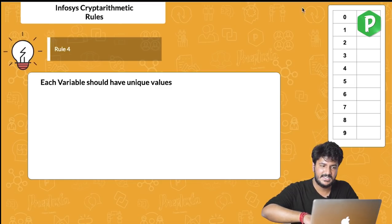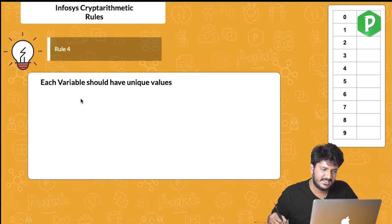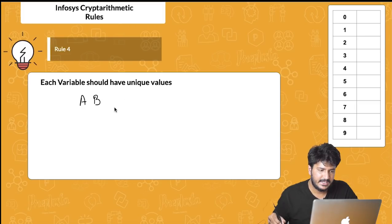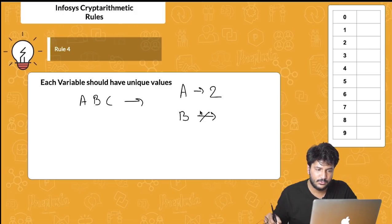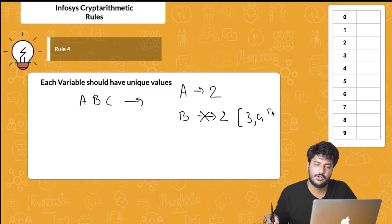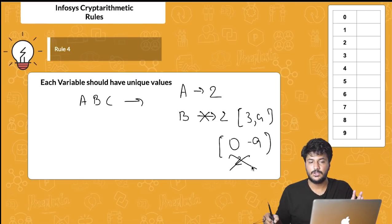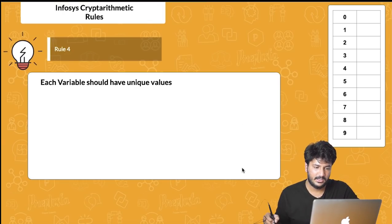The second rule states that each variable must have a unique value. For example, if there are three variables A, B, and C, and A has taken the value 2, then B cannot also be 2 — it must take some other value between 0 and 9 except 2.